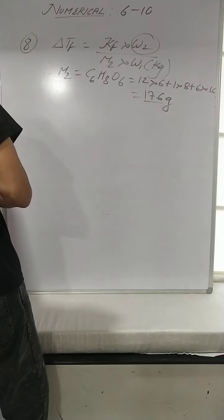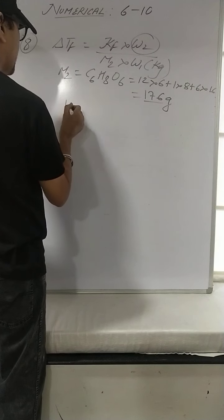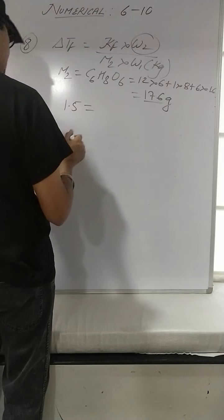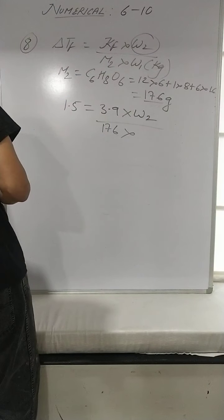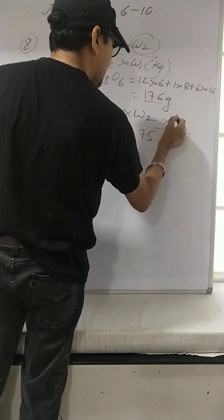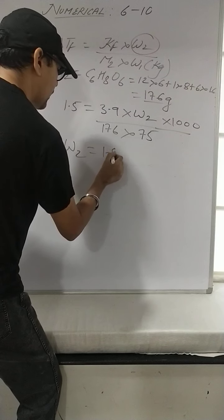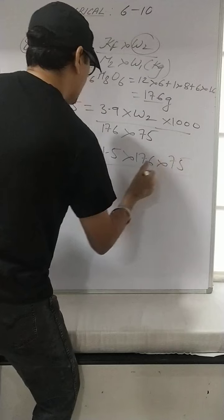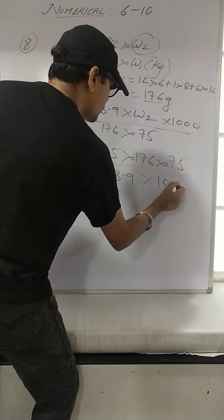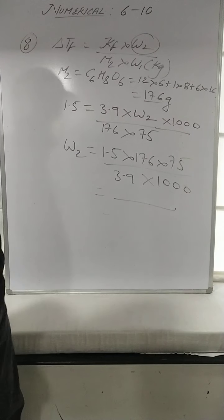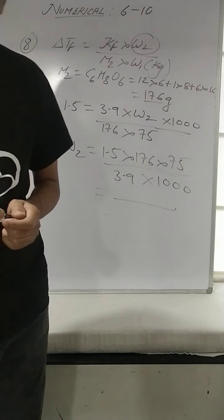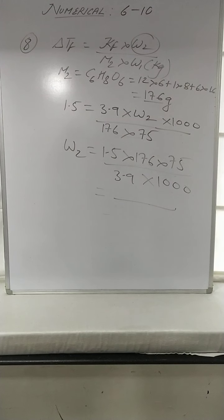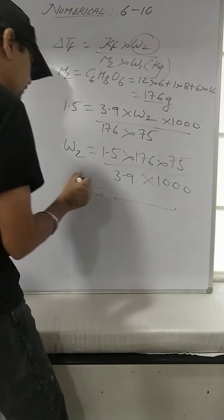Delta Tf = 1.5, Kf = 3.9, M2 = 176, W1 = 75 g. So W2 = (1.5 × 176 × 75) / (3.9 × 1000). Solve quickly and the weight of the solute (ascorbic acid) should come out to 5.08 grams.